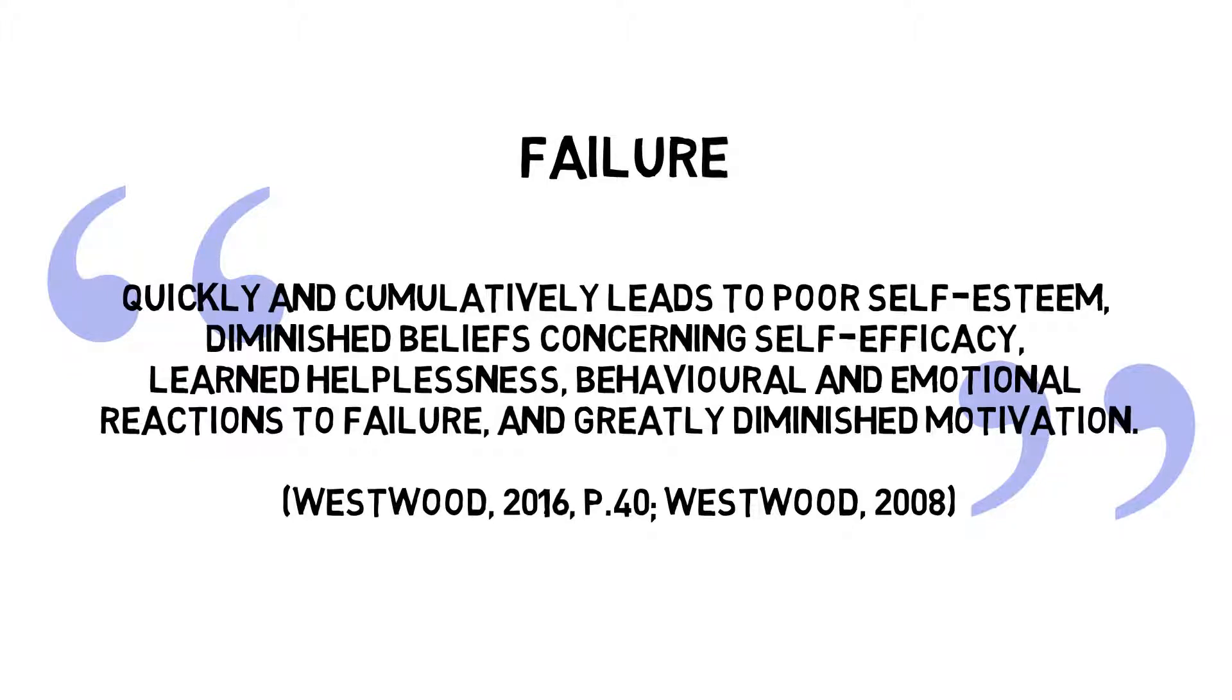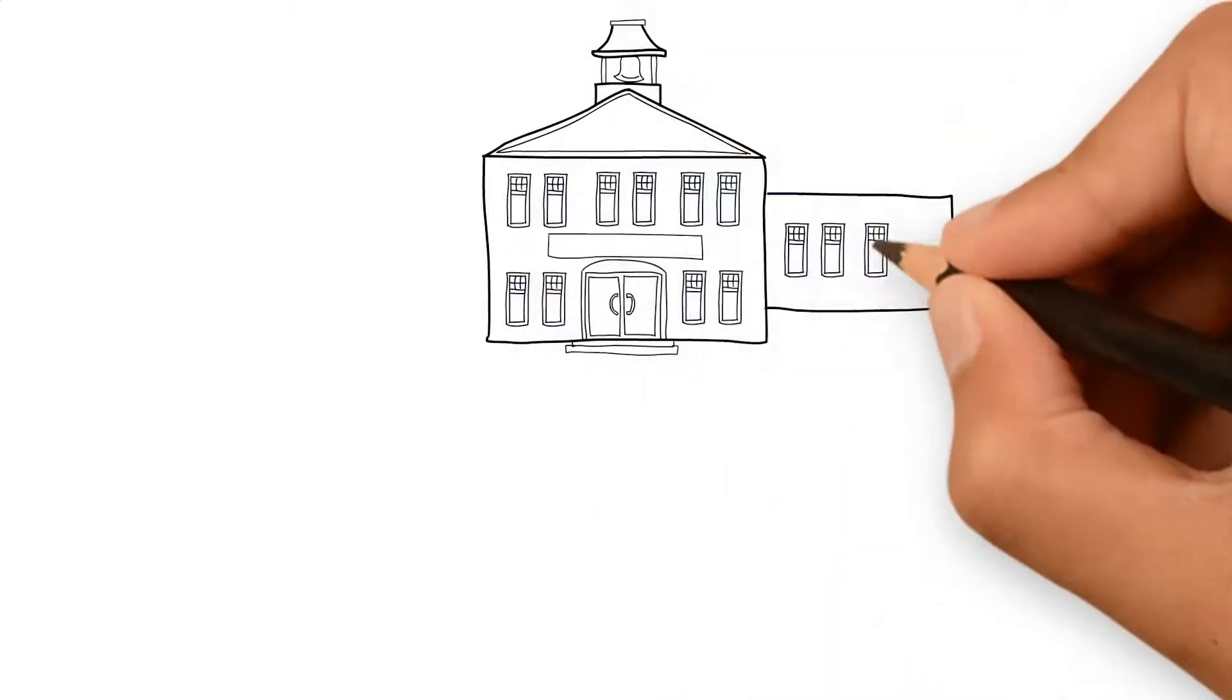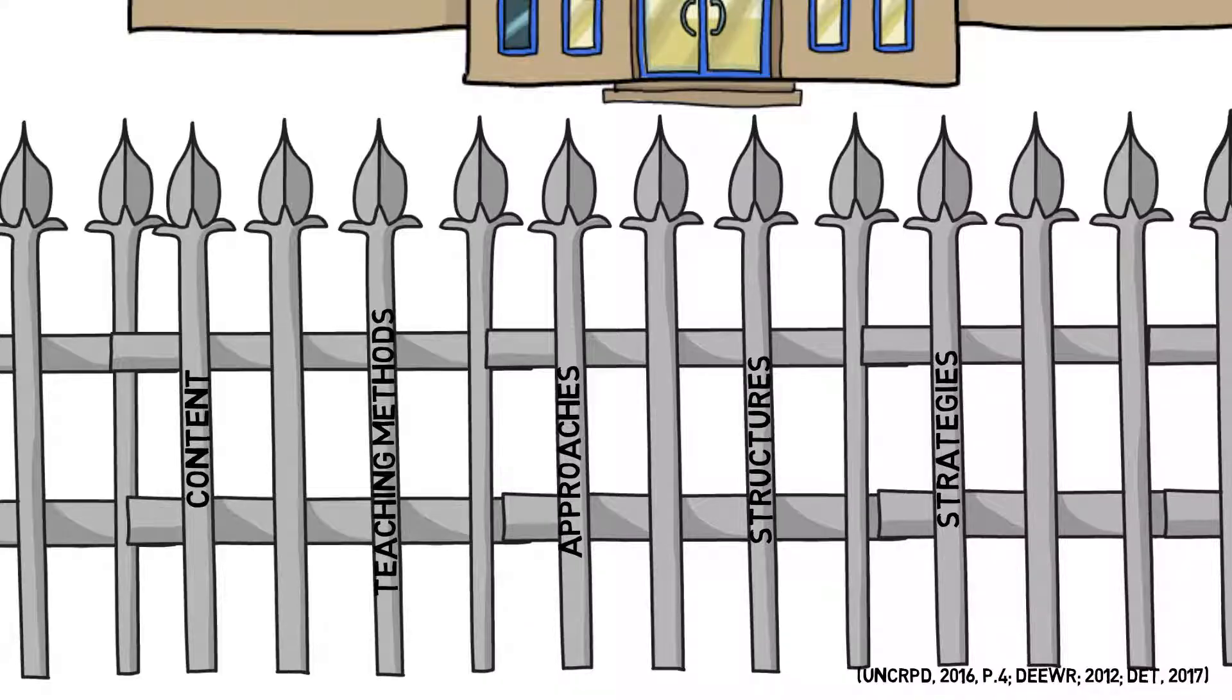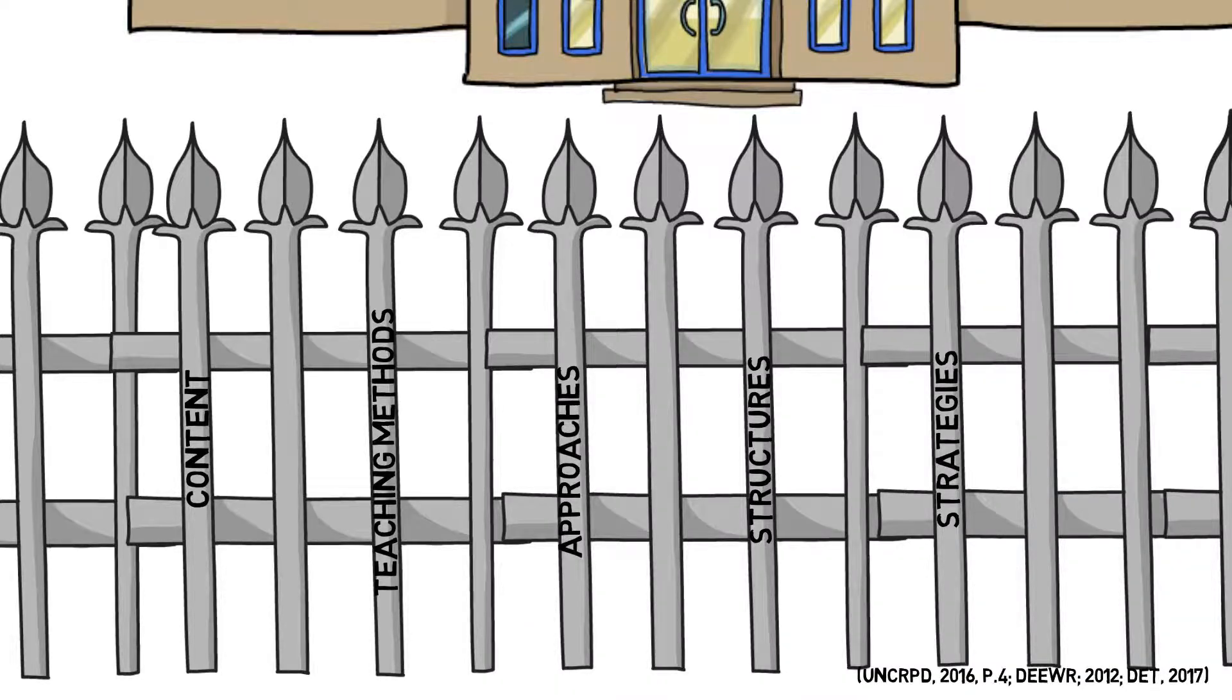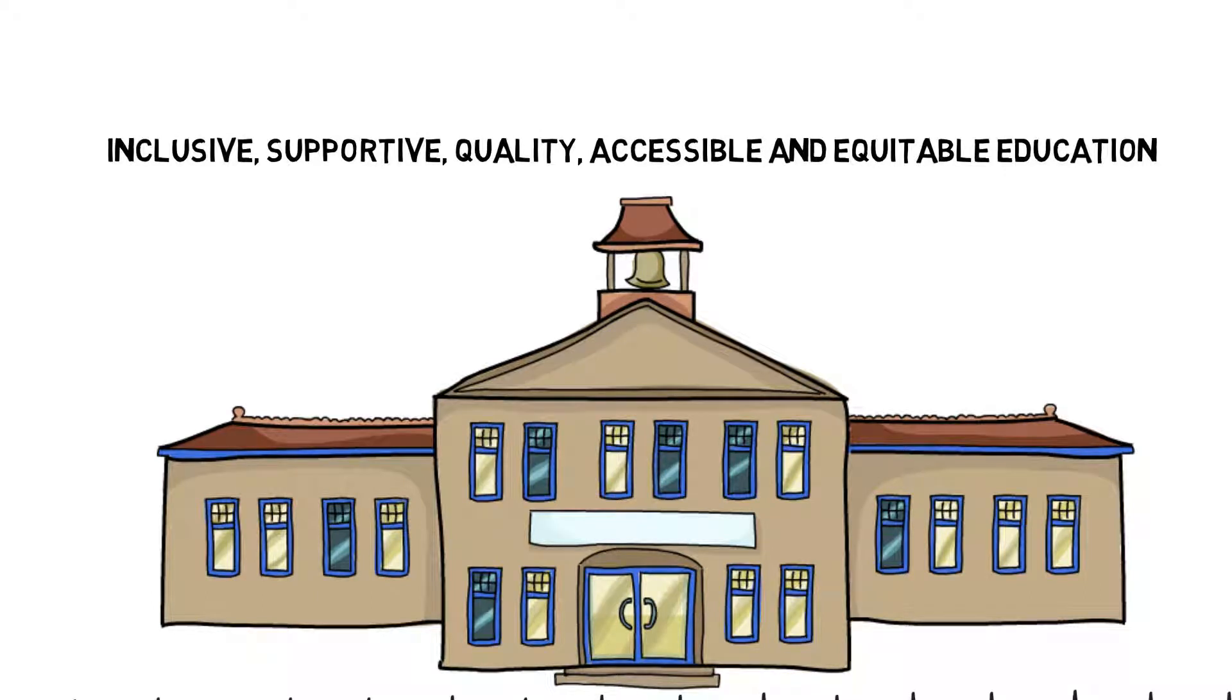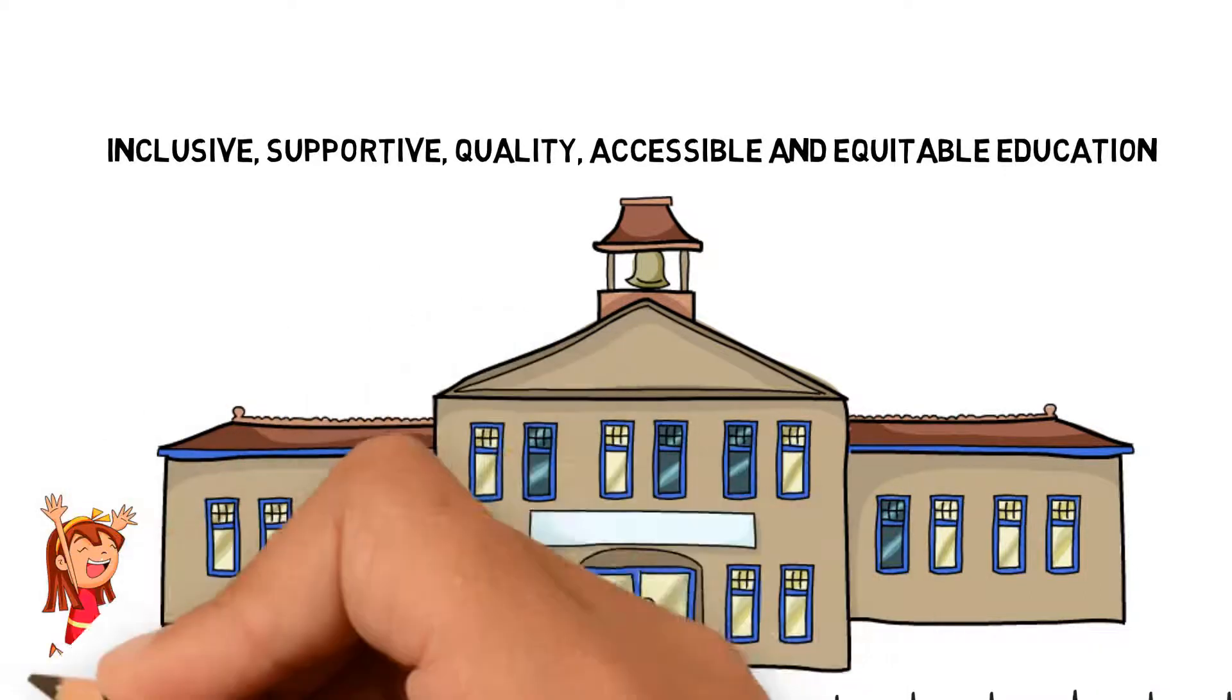But why should teachers make adjustments for students with mathematical difficulties? Legislation requires teachers to remove barriers by modifying content, teaching methods, approaches, structures and strategies to create an inclusive, supportive, quality, accessible and equitable education where all students are successful.